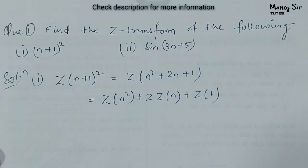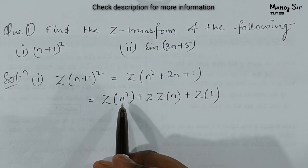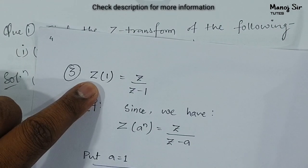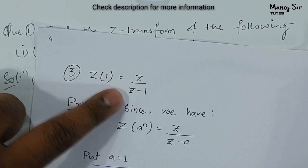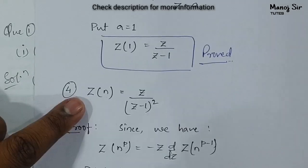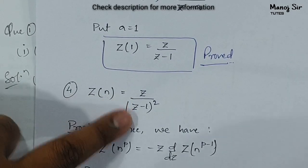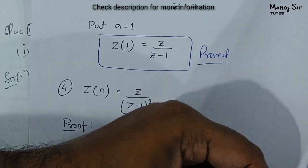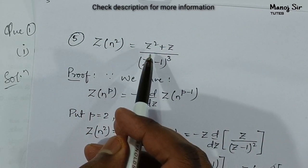Now we have already found that the Z-transform of 1 is z/(z−1), the Z-transform of n is z/(z−1) whole square, and we also have the Z-transform of n squared, that is (z²+z)/(z−1) whole cube.